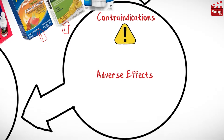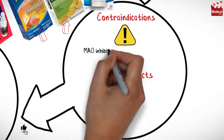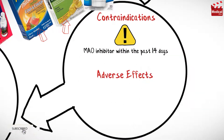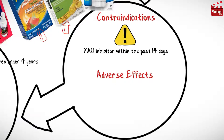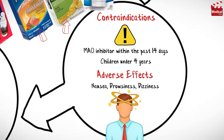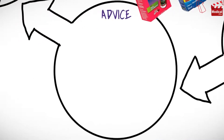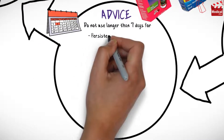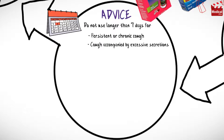Do not use dextromethorphan if you have used an MAO inhibitor within the past 14 days. It is not recommended for children under 4 years. Common side effects include nausea, drowsiness, and dizziness. Do not use this medication longer than seven days, for persistent or chronic cough, or when cough is accompanied by excessive secretions.